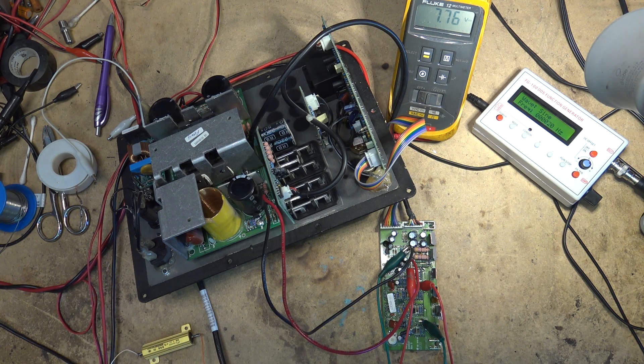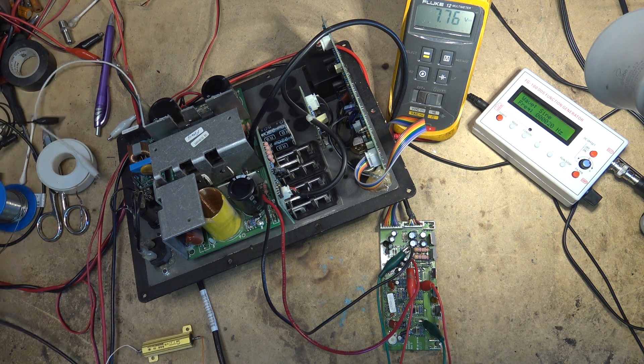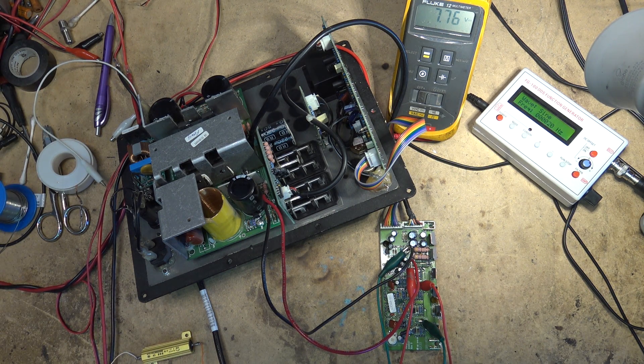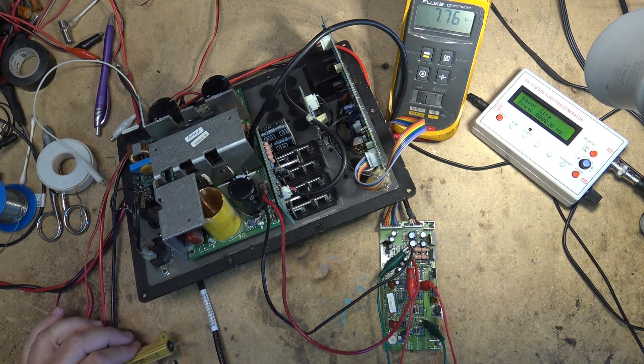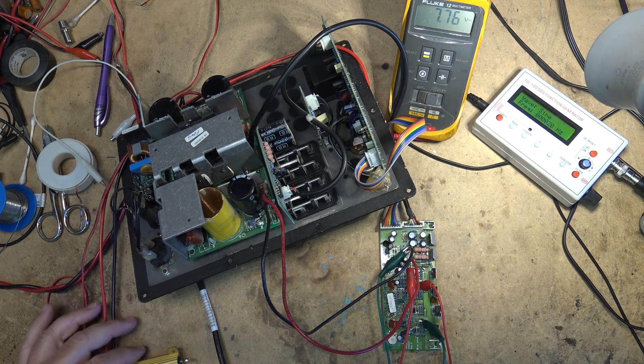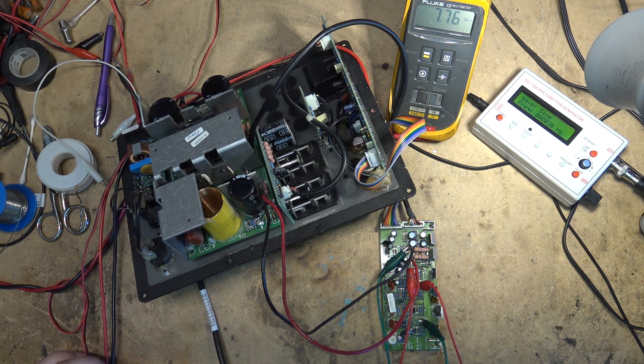I'm just looking up an 8 ohm 50 watt wire wound resistor so that I can put my scope on here. I just want to take a look at what the signal looks like coming out of the amplifier and see how bad or how good it is.